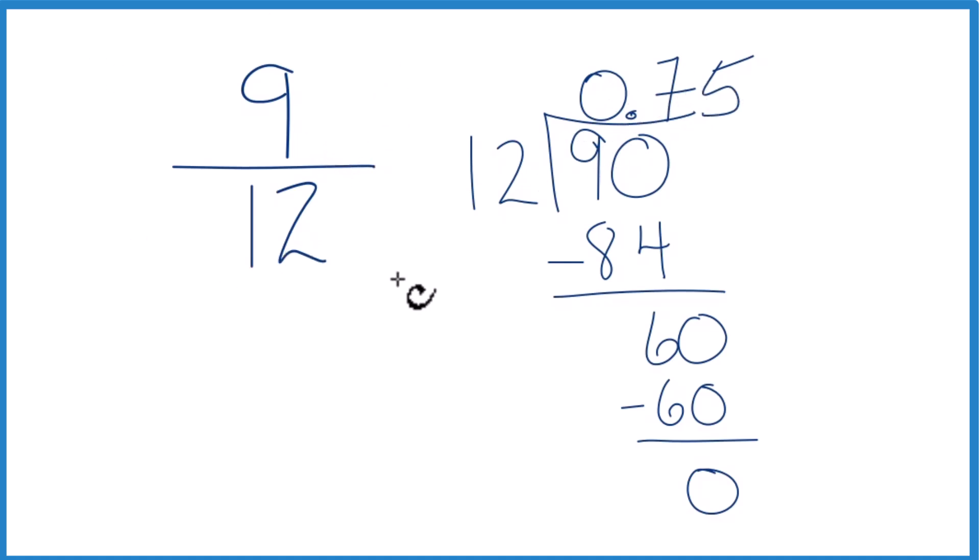You could have also simplified this because 3 goes into 9 and 12 evenly. So 9 divided by 3, that's 3. 12 divided by 3 is 4, 3 fourths, which is equal to 0.75.